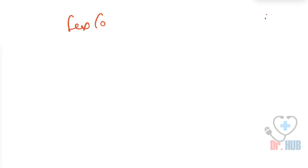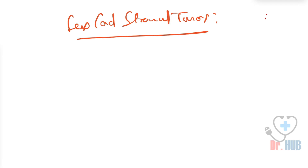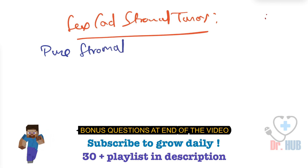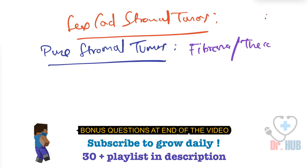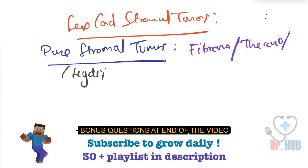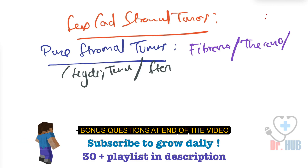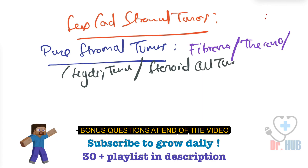Next is the sex cord stromal tumors. Under sex cord stromal tumors, there are the pure stromal tumors. The pure stromal tumors include the fibroma, the thecoma, the Leydig tumor, and the steroid cell tumors.